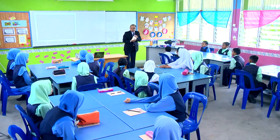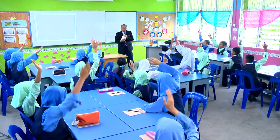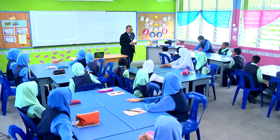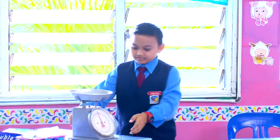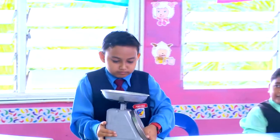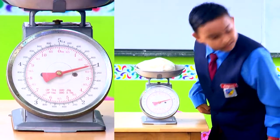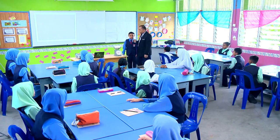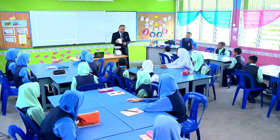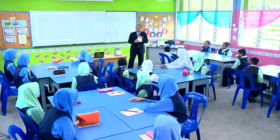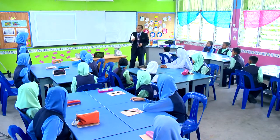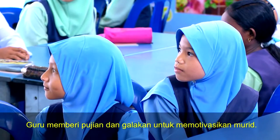Siapa nak cuba timbang ni? Sekarang kita jemput Aiman. Cuba timbang. Kita timbang di depan supaya sama-sama tengok. 1 kilogram, Encik Goh. Bagus, Aiman. Gula yang ada dalam paket ini adalah 1 kilogram. Aina, kalau 1 kilogram ditukarkan kepada gram, berapa Aina? 1 kilogram bersamaan dengan 1,000 gram. Bagus Aina, tepat jawapan Aina.